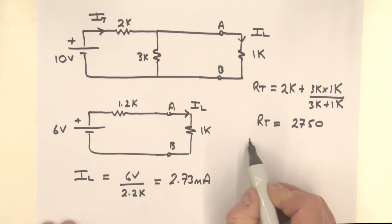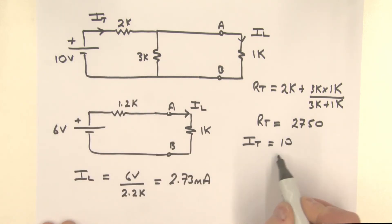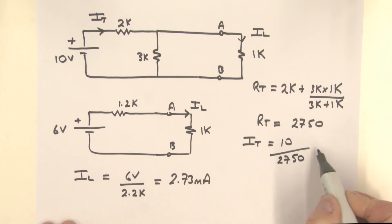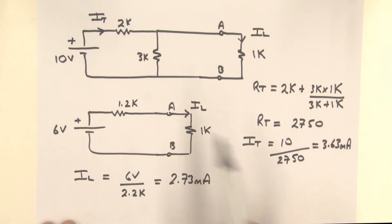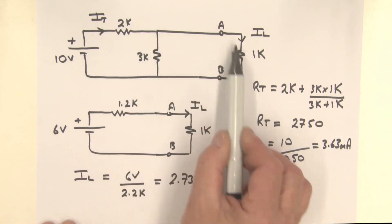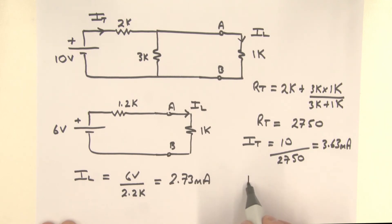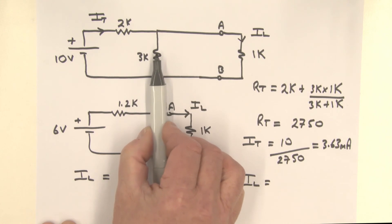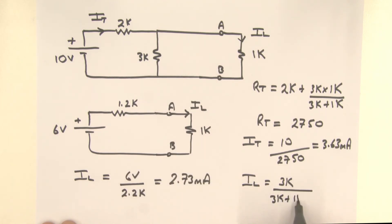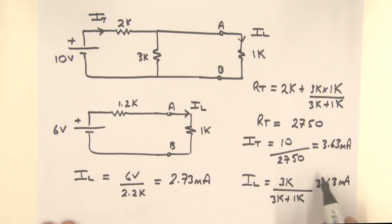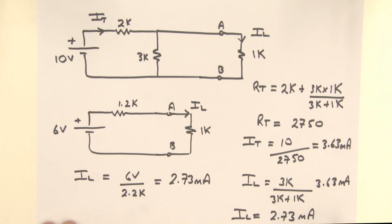Having found the total resistance, we can find IT: 10 volts divided by 2750 ohms, which comes out to 3.63 milliamps. Now we have a current divider. Using the current divider relationship, the load current IL equals the opposite resistance 3K divided by the sum 3K plus 1K, times IT of 3.63 milliamps. Working that out, IL equals 2.73 milliamps — the same as the Thevenin equivalent approach, as we would expect.